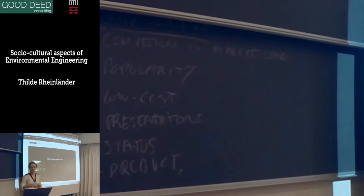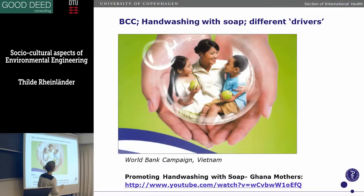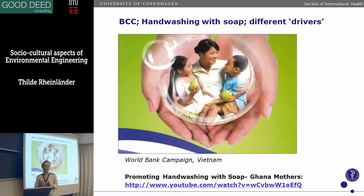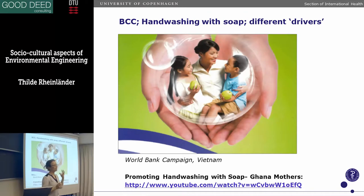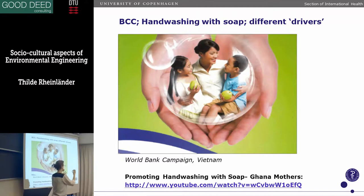So you get the point about social marketing — these are some of the drivers they use. Behavior change communication is the next school of thought. I'll show you two examples from Vietnam and one from Ghana. This is highly professionalized communication strategies that also draw a lot on marketing principles, where you are really analyzing the population you want to communicate with and you design messages based on your knowledge about people's ideas, perceptions, and aspirations.